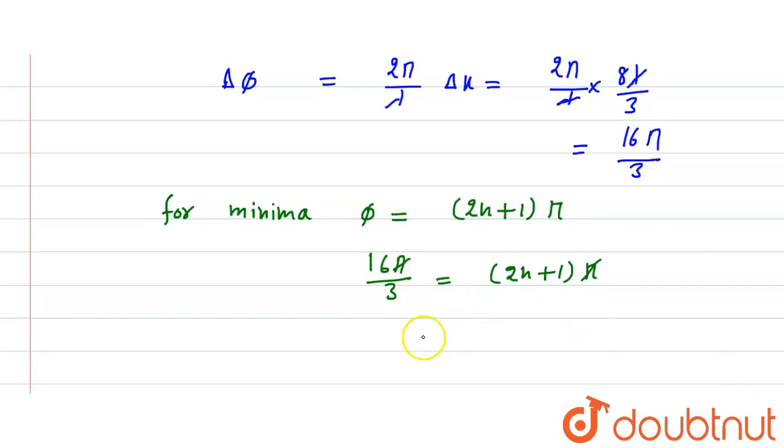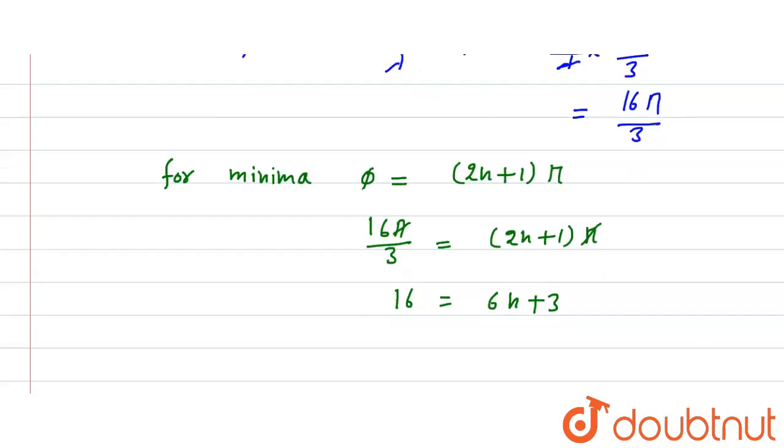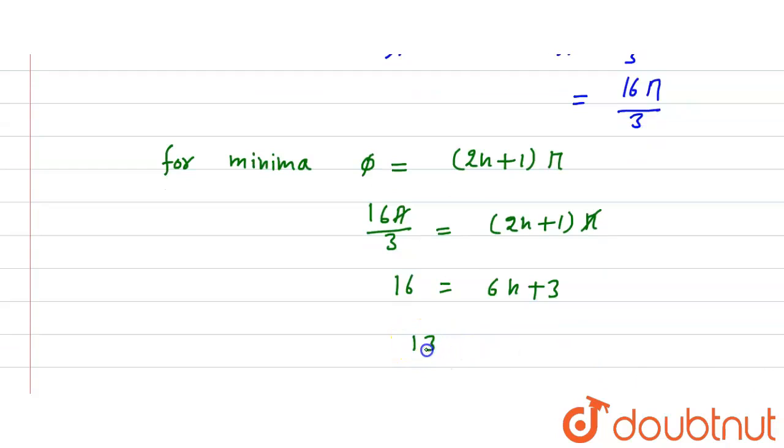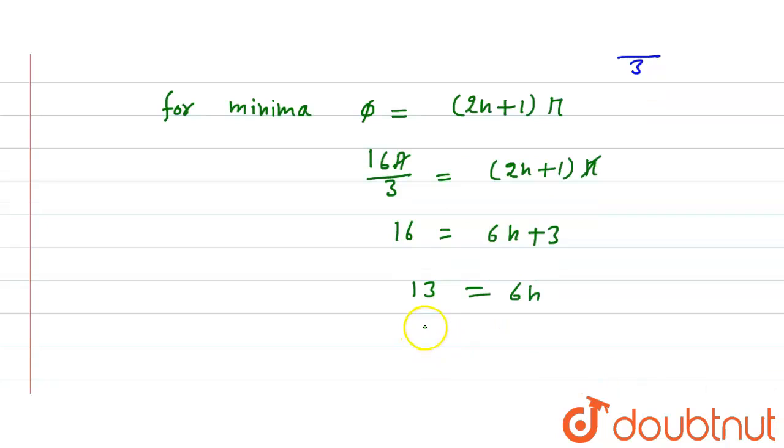And here calculate: 16 equal to 3 times (6n+3). And here it is equal to 16 minus 3, which is 13 equal to 6n.